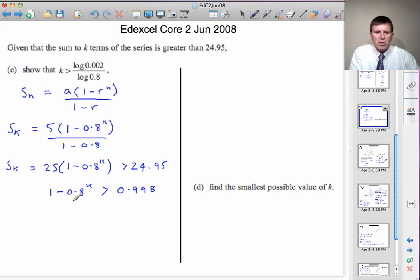Now we'll rearrange this. Let's bring the 0.8 to the k to the right-hand side, where it will become positive, and take the 0.998 to the left-hand side, where it will become negative. So 1 minus 0.998 is greater than 0.8 to the k.